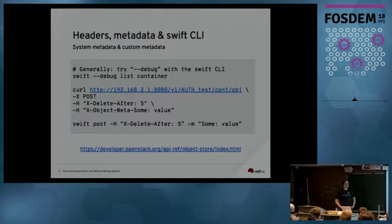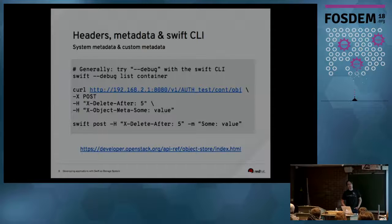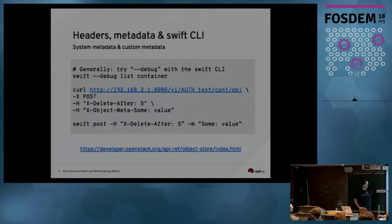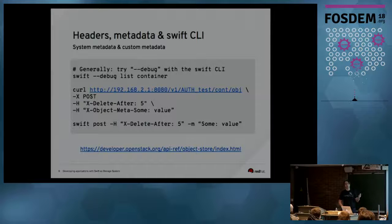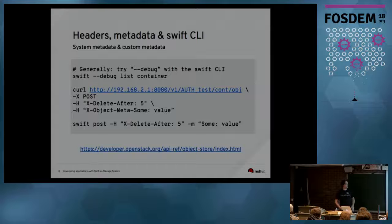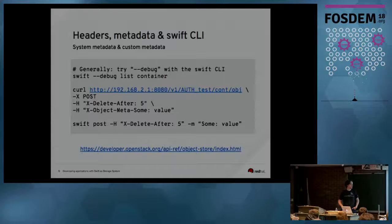One of the simplest ways to start interacting with the Swift cluster is to use the Python Swift client. There is a very useful option, --debug, which includes examples of how to do the same request using curl. When you do 'swift --debug list container', somewhere in the output you will see a very similar curl command that you can use directly. This gives you some idea how to start interacting with the REST API directly, not using the Swift command line interface. There are two ways to send metadata: uppercase -H natively sends a header, and lowercase -m lets you set object metadata directly using the Swift CLI.